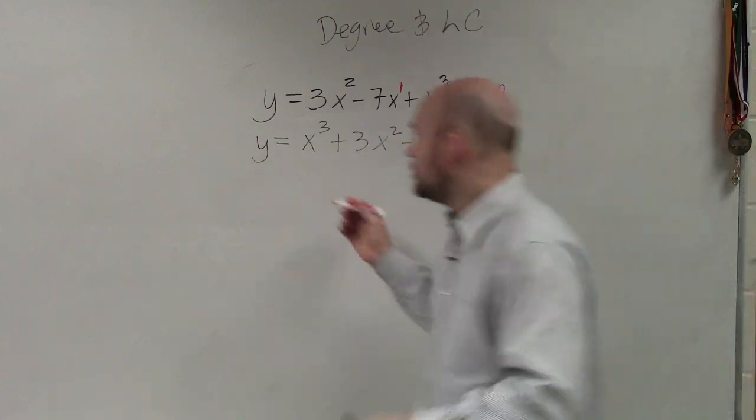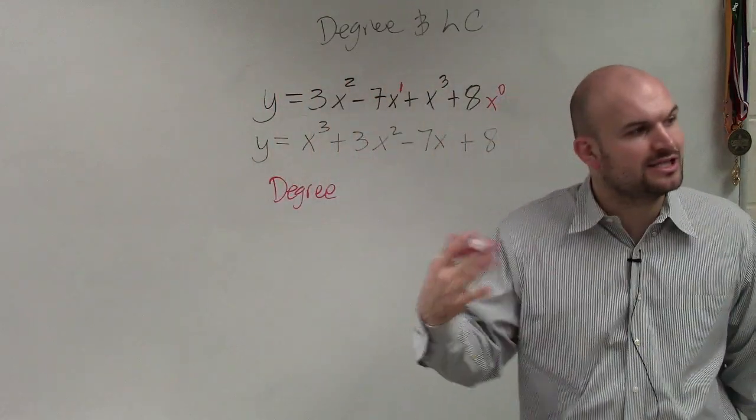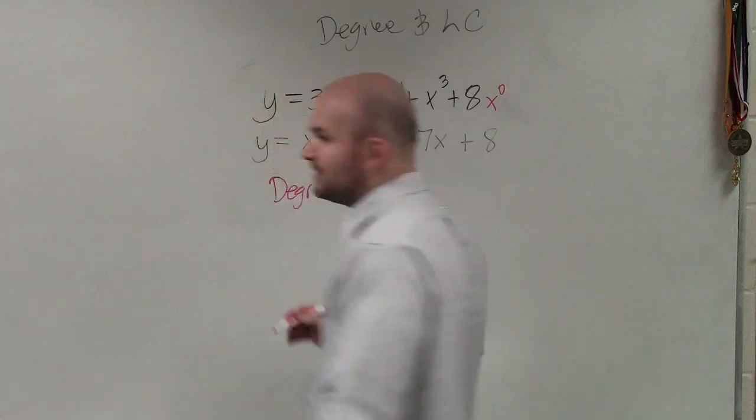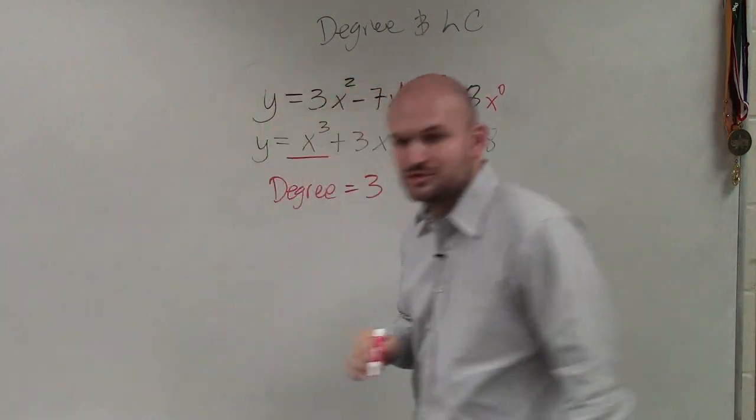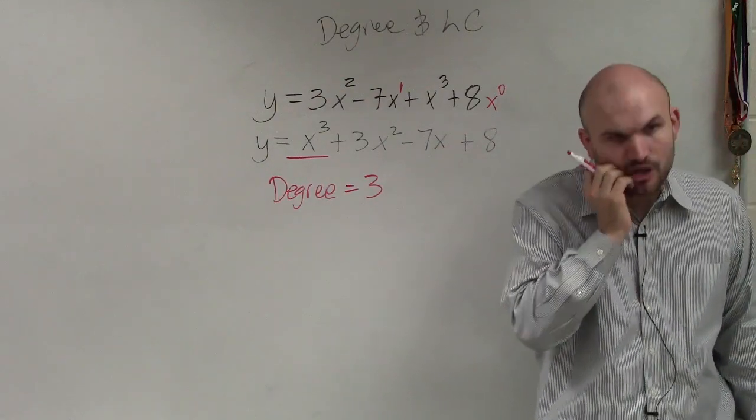Three. So the degree of our polynomial is the largest degree of all of our monomials. So we're going to say the degree is three. So this term, which is our term that had the largest degree, is what we call our leading term.